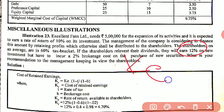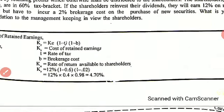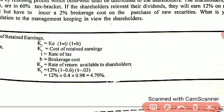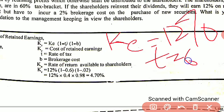The cost of equity in this case is the opportunity cost of 12%, since shareholders can earn 12% externally. So ke (opportunity cost) = 12%. Tax rate t = 30%, personal tax bracket p = 60% (0.6), and brokerage b = 2%.